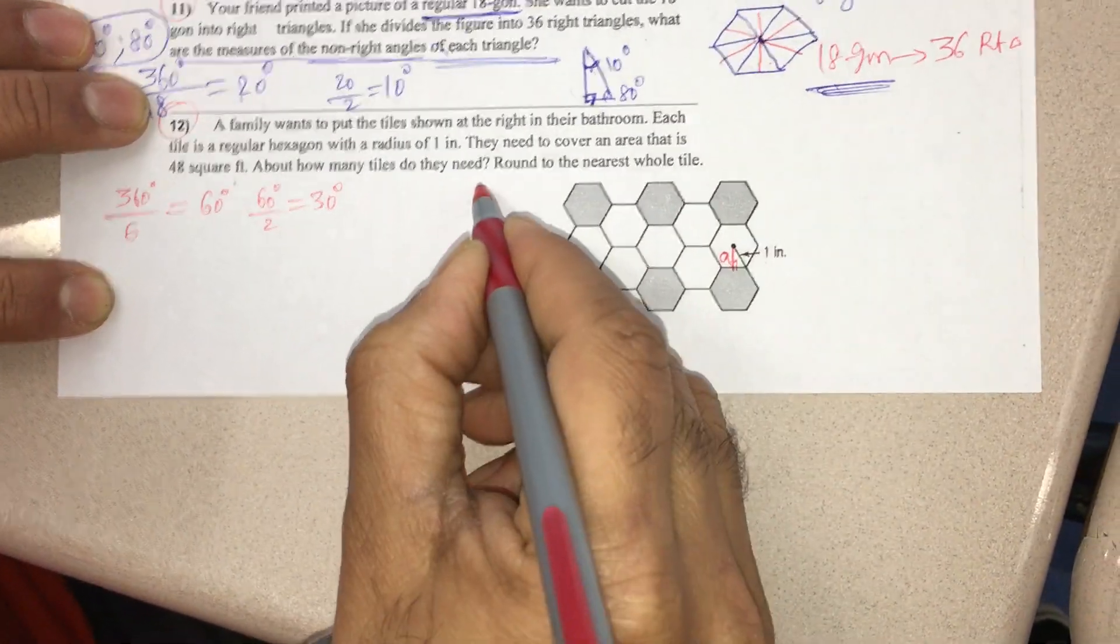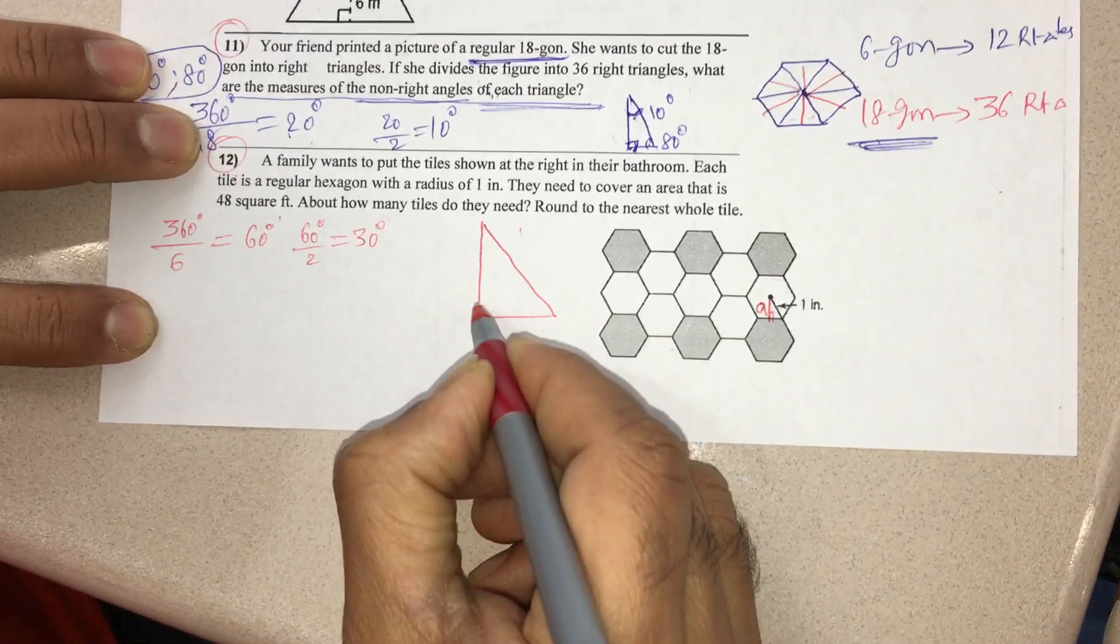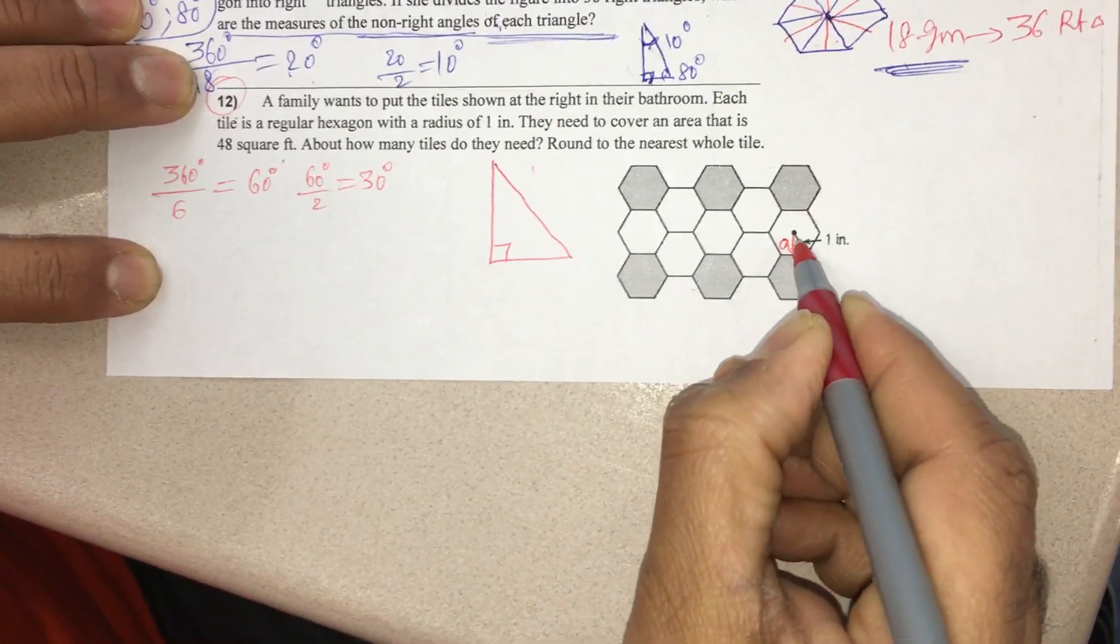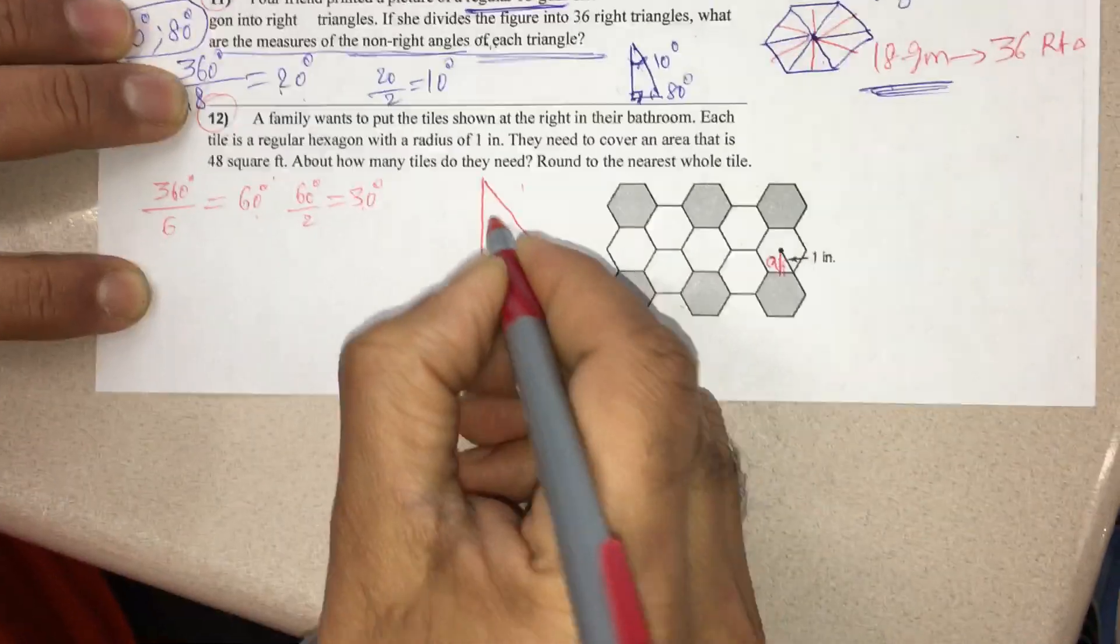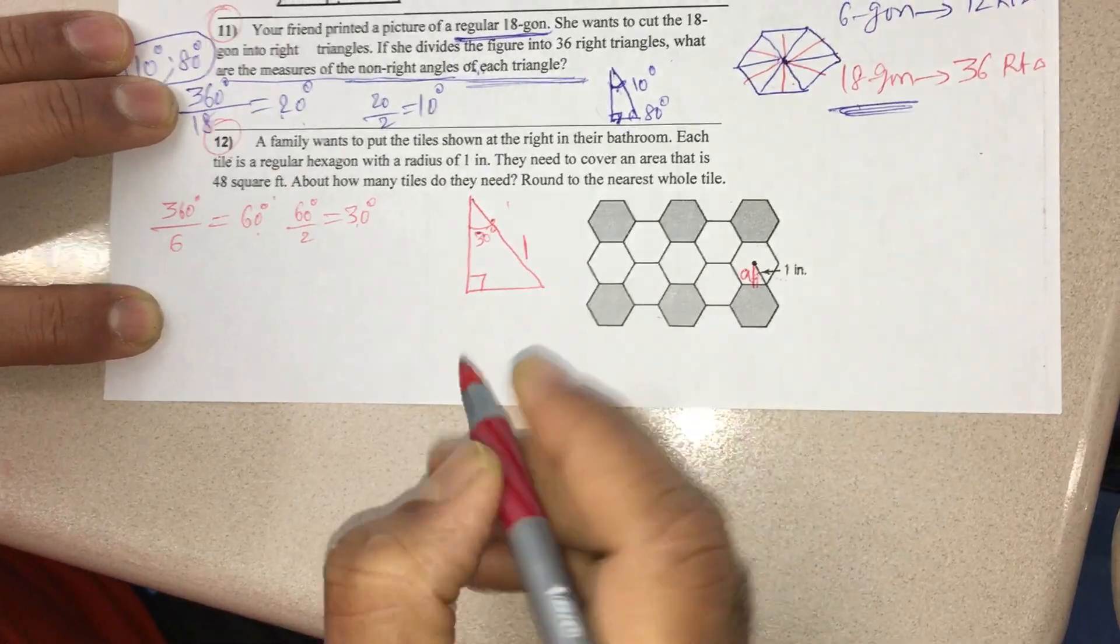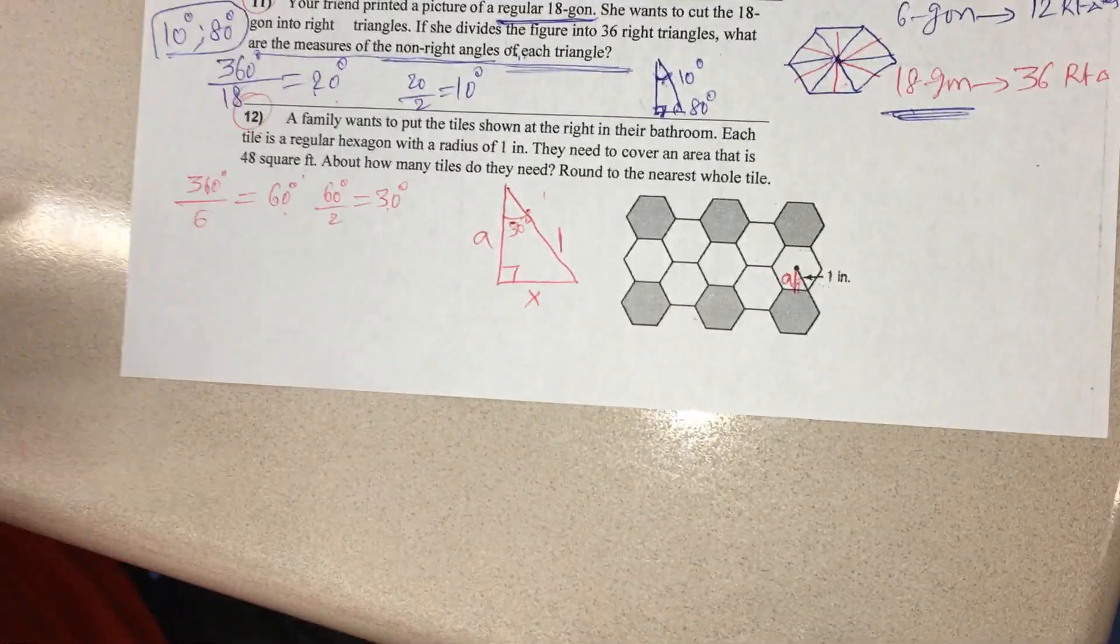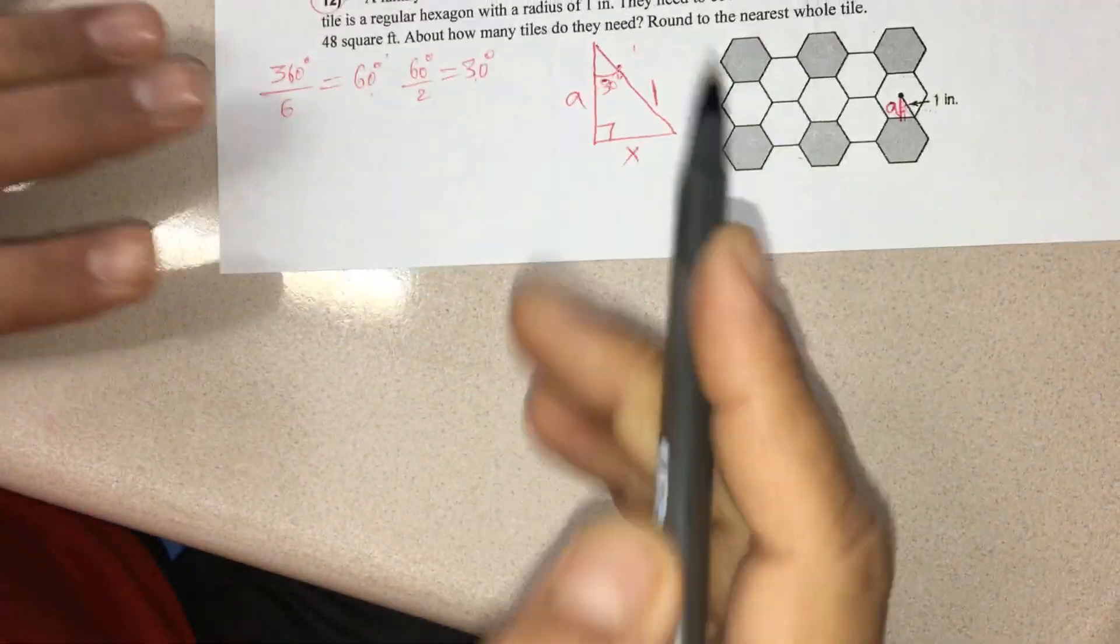I can show you that triangle in a bigger picture here, that little triangle. Here it is 90 and this angle I got is half of that, which is 30 degrees. This side radius is given as 1 inch, and this is the apothem and this is x. So what am I doing now?